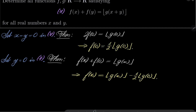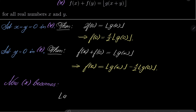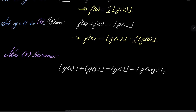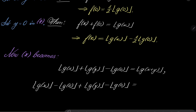This allows us to rewrite our equation asterisk. Asterisk now becomes: floor of g(x) minus floor of g(0) plus floor of g(y) minus floor of g(0) equals floor of g(x+y) minus floor of g(0), after subtracting floor of g(0) from both sides.